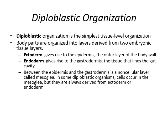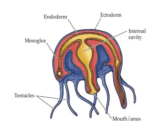Diploblastic organisms are two-layered organisms — that is, ectoderm and endoderm. Ectoderm gives rise to the outer covering or body wall, and endoderm gives rise to the gastrodermis or the gut related to feeding. Between epidermis and endodermis there is a mesoglea — a thick jelly-like material that sometimes has cells and sometimes does not. In the diagram, the outer blue layer is ectoderm, the inner pink is mesoglea, and the yellow is endoderm. The jellyfish is an example.